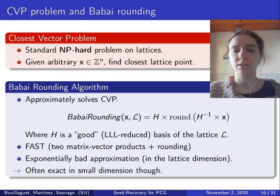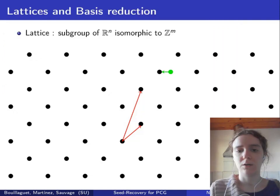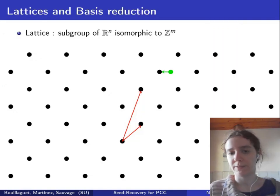This algorithm is the Babai rounding algorithm, which only uses one rounding and two matrix products. This algorithm needs a good basis of the lattice. And the red basis here is not a good basis of the lattice, because one of the vectors is far too long.